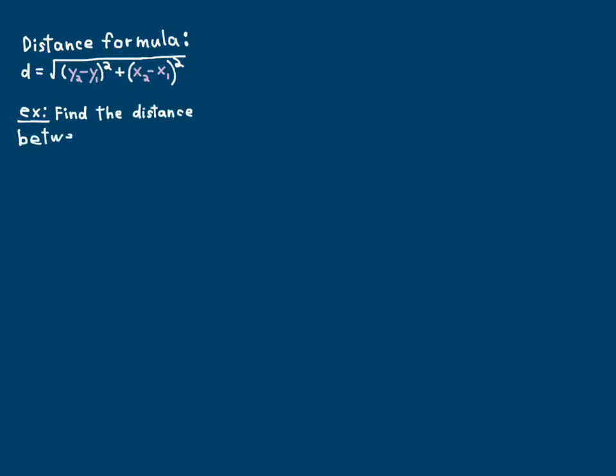So here's an example: find the distance between the points. That's a common thing to use a distance formula for. So you're given those two points. Now remember, you want to subtract the x-coordinate from the x-coordinate and the y-coordinate from the y-coordinate. You square each one of the results of those, then add them together and do the square root of the whole thing.